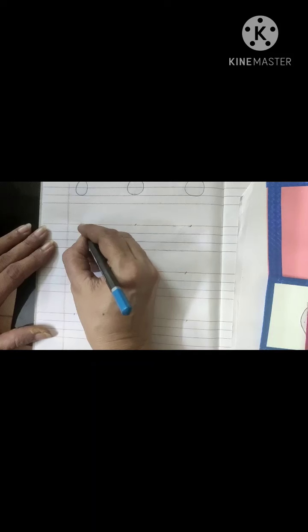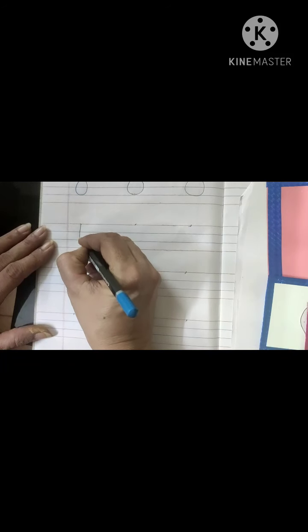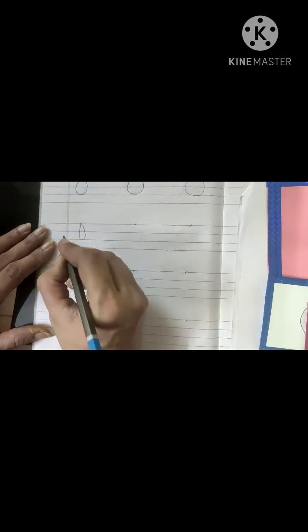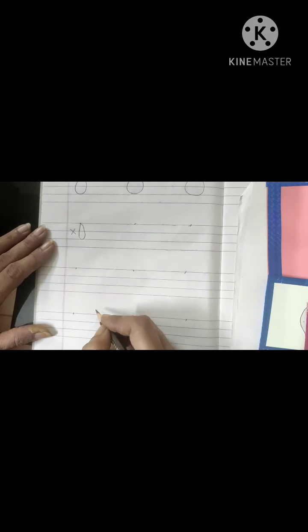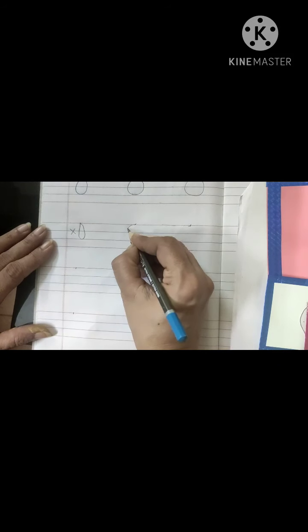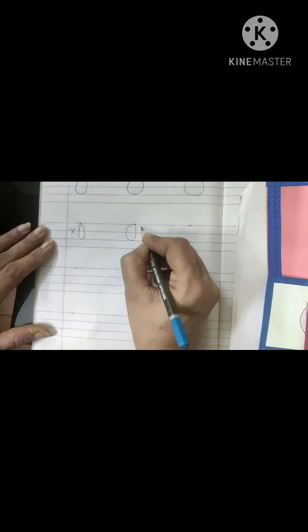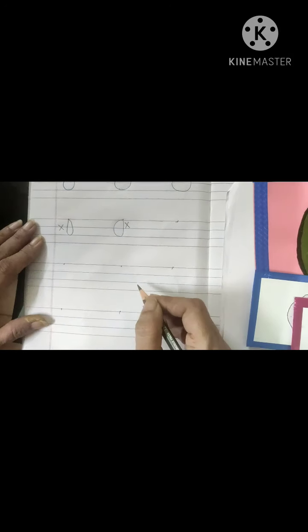Just remember ki aapne aise one karke ni banana. Aise agar aap one karke banao ge to wrong ho jayega. Or agar aapne yaaha se round kar diya, or phir aise one karke upar lege, to ye bhi wrong ho jayega.